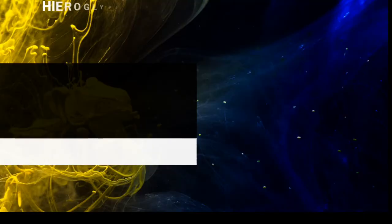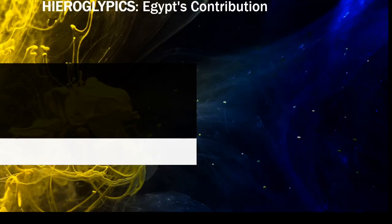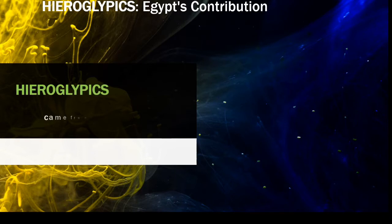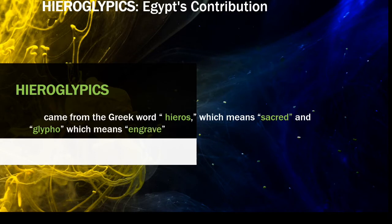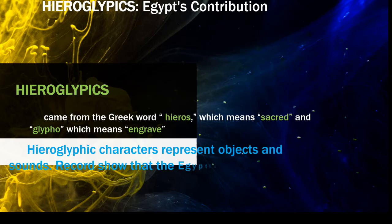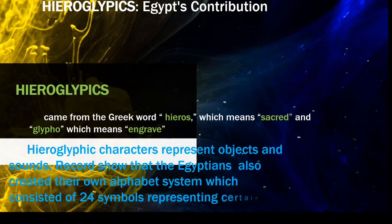Next was Hieroglyphics, Egypt's contribution. Hieroglyphic came from the Greek word hieros, which means sacred, and glypho, which means engraved. Hieroglyphic characters represent objects and sounds. Records show that the Egyptians also created their own alphabet system which consisted of 24 symbols representing certain letters.